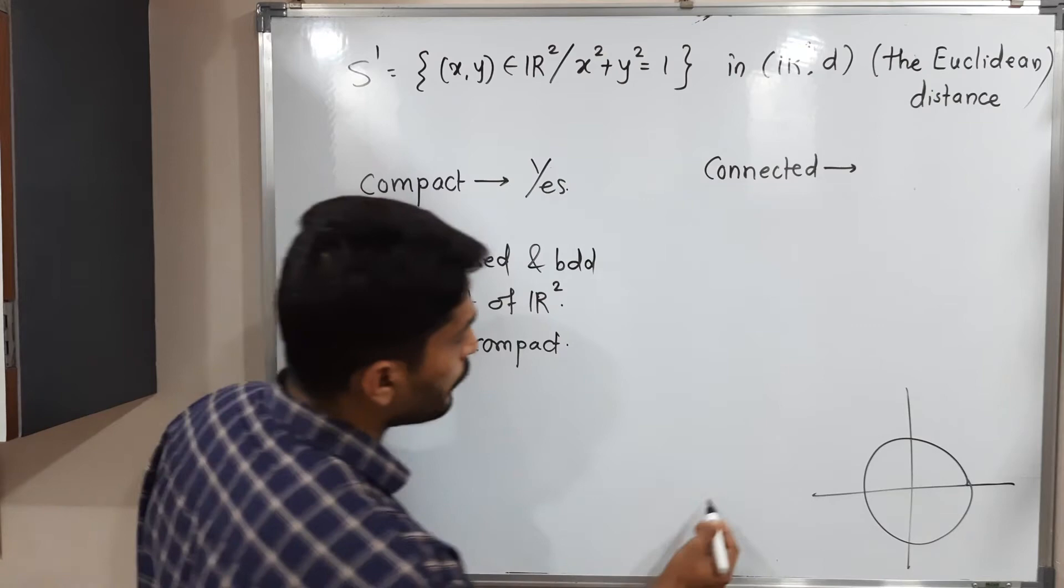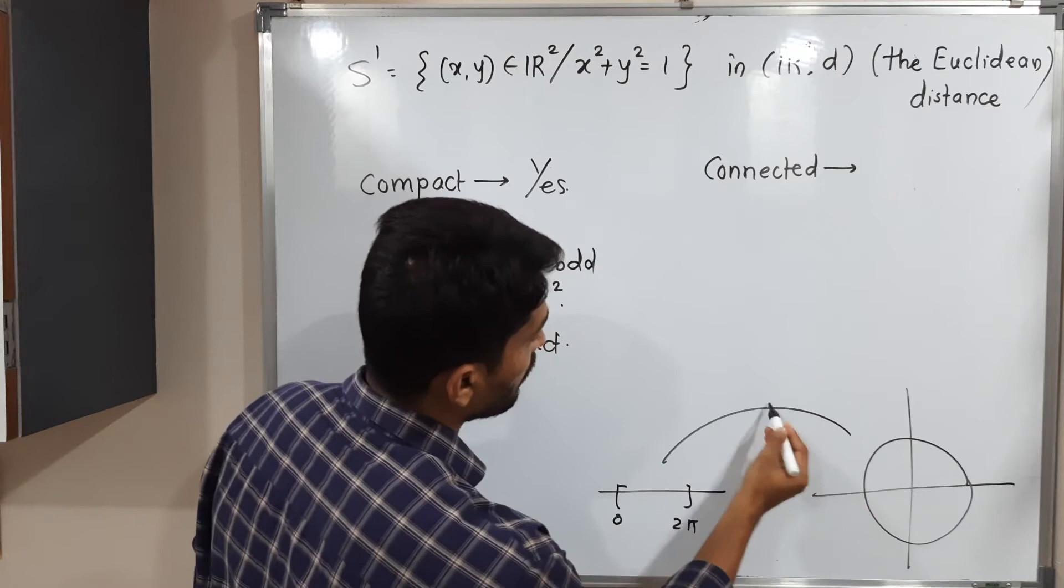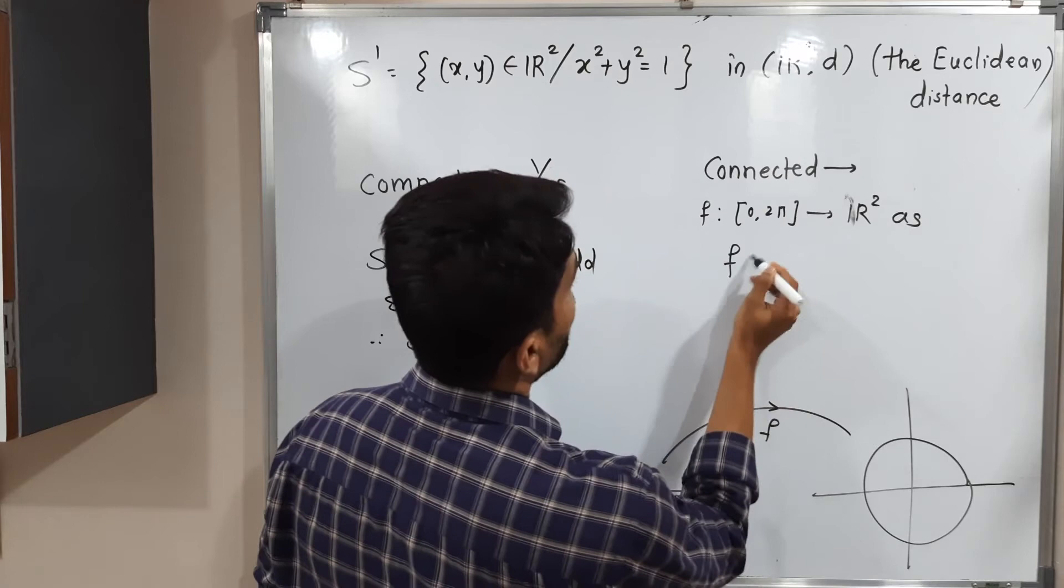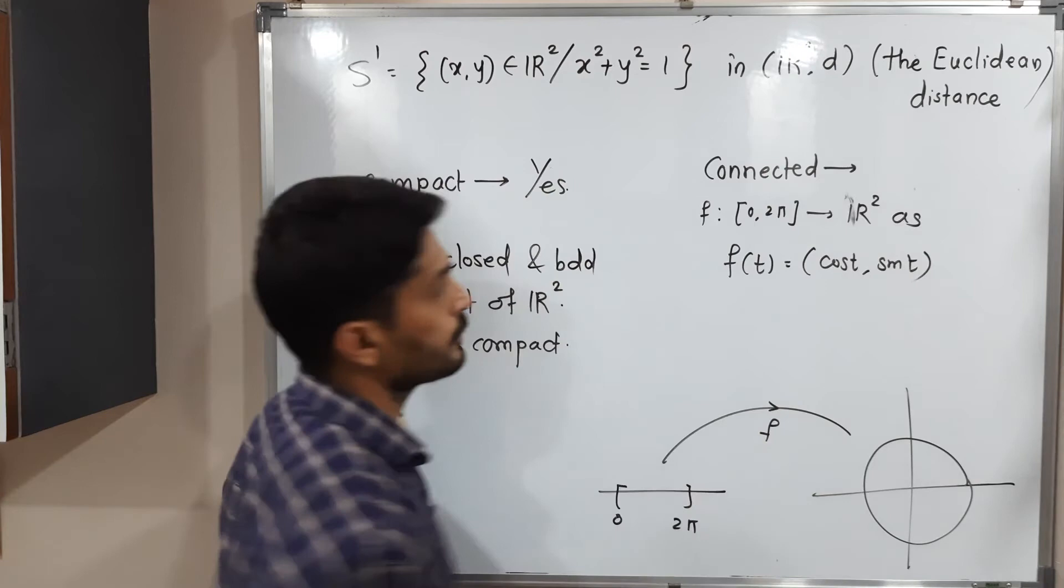On closed interval 0 to 2 pi, function f. In this way I will mention here f defined from closed interval 0 to 2 pi to R2 as f of t is equal to cos t comma sine t. So this is the function we have.